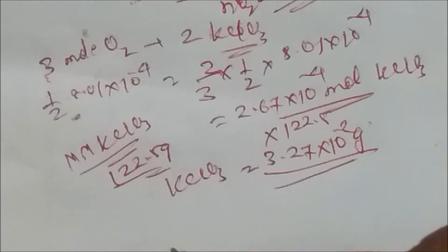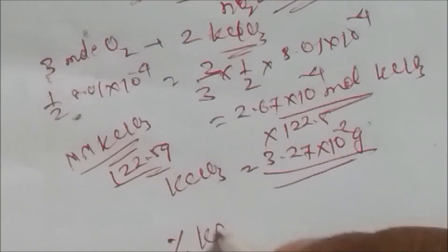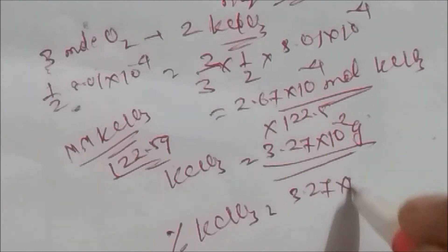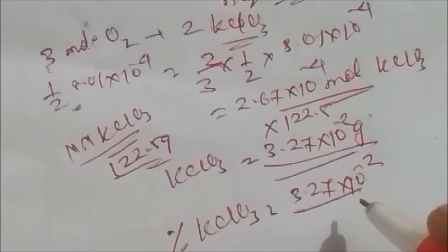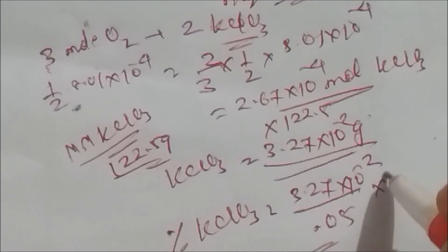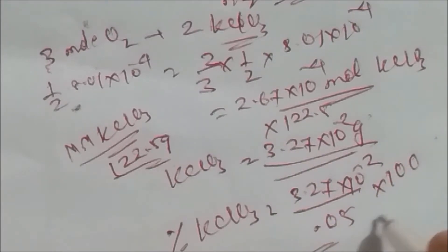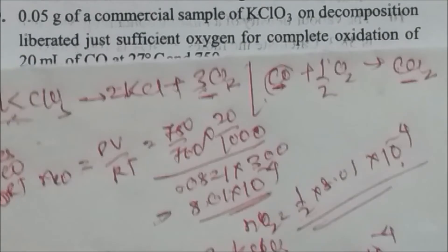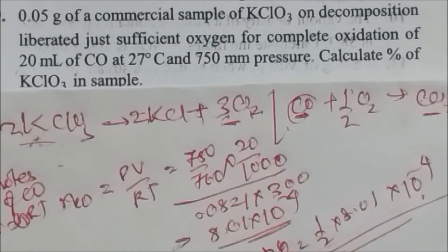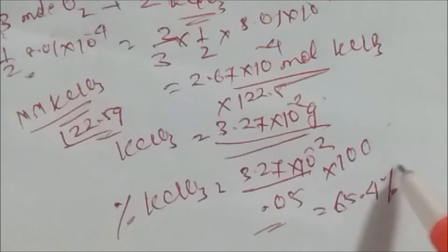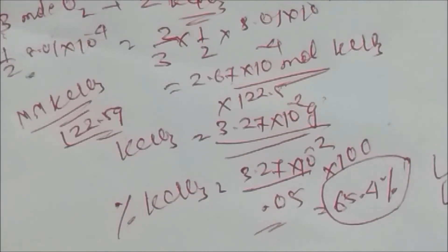The percentage of KClO3 = (mass of KClO3 / total sample mass) × 100 = (3.27 × 10⁻² / 0.05) × 100 = 65.4%. So the percentage of KClO3 in the sample is 65.4%.